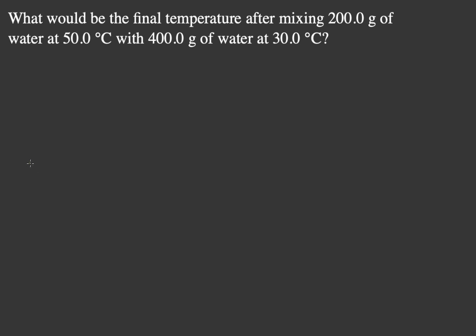What would be the final temperature after mixing 200 grams of water at 50 degrees with 400 grams of water at 30 degrees Celsius? This sounds an awful lot like our average atomic mass that we calculated back from chapter 1, 2, and 3.